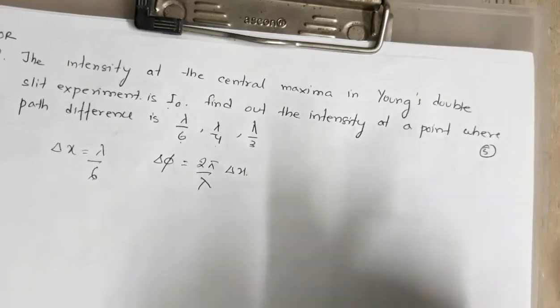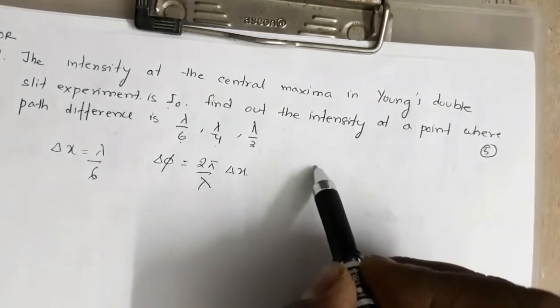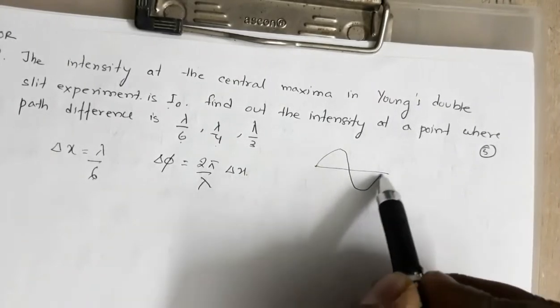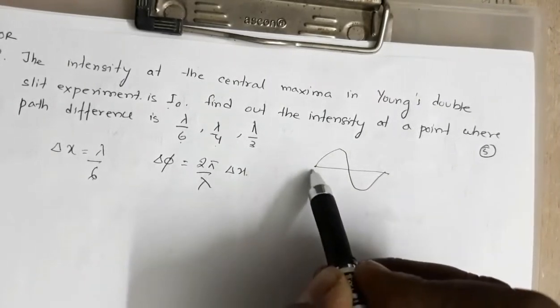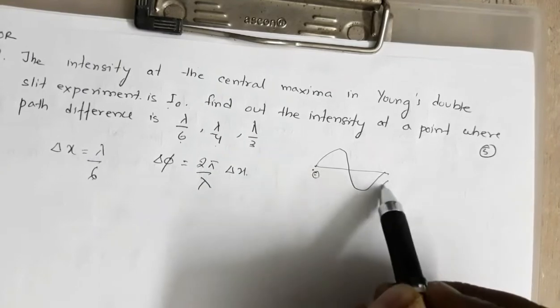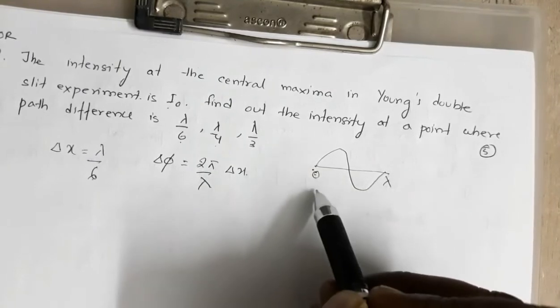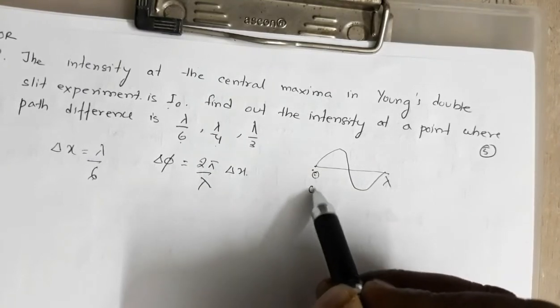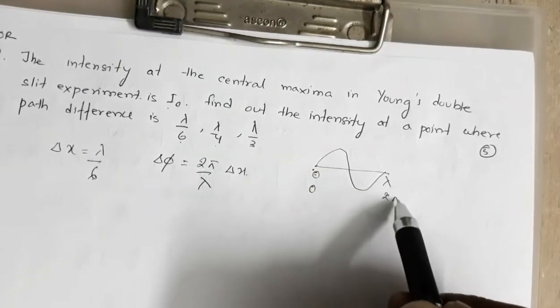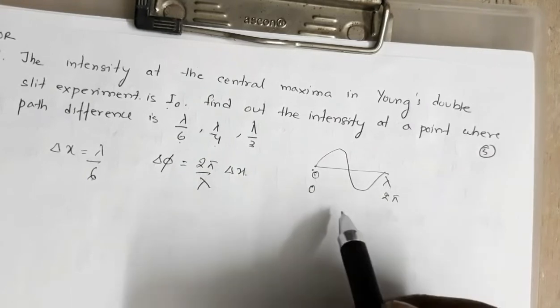This question is from the 2015 paper. In Young's double slit experiment, the two slits are separated by 1.5 mm and the screen is placed 1 meter from the plane of the slits. A beam of light consisting of two wavelengths — 650 nm and 520 nm — is used to obtain interference fringes.